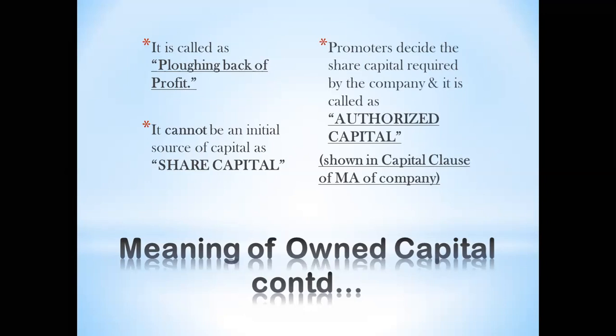The promoters decide the share capital required by the company, and this is called authorized capital. This is shown in the capital clause of the Memorandum of Association (MA). The promoters are the first people who come up with the idea of forming a company. Whatever share capital they decide upon is called the authorized capital, and the details are found in the Memorandum of Association under the capital clause.